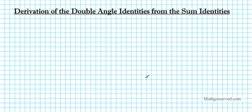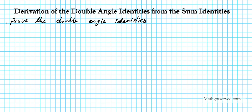Good day students. On this clip we're going to be deriving the double angle identities from the sum identities. So let's go ahead and write down the instruction for the derivation that we're going to be doing. We're going to be assuming that the sum identities are true and we're going to use them as a basis for constructing our double angle identities.